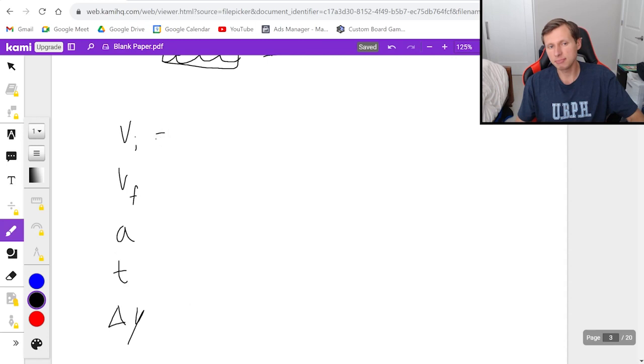In this case, I dropped the penny, so v initial zero, v final I don't care about, acceleration is negative 9.8, because it's always negative 9.8 for gravity. Time is what I'm solving for, because I want to know the time it takes to hit the bottom. And then delta y is not 150, but negative 150. Why? Because is your penny going up? No, it's going down, so negative 150.